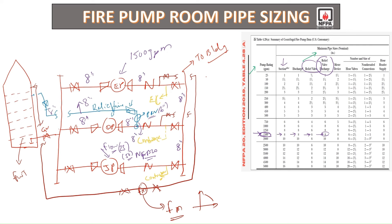Apart from that, we have the meter device — the flow meter line. For the flow meter line you need to consider 8 inch as per this particular table. The gate valves, the flow meter size, and all these things will be 8 inch only. So here we have taken 8 inch line going to the fire water tank.